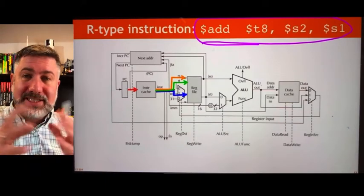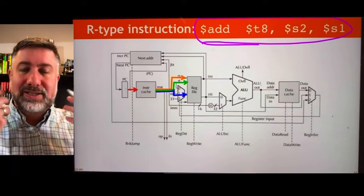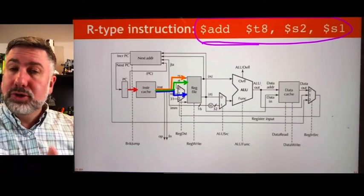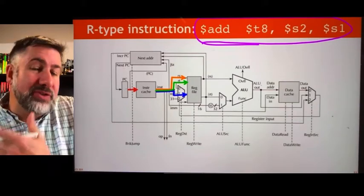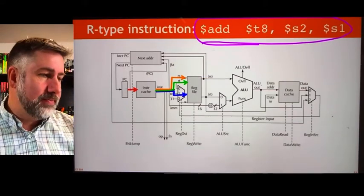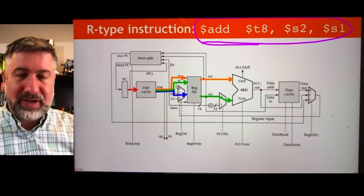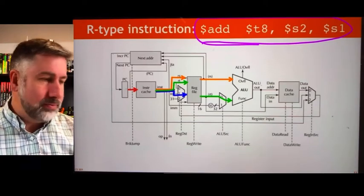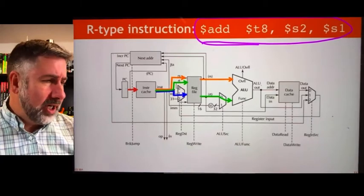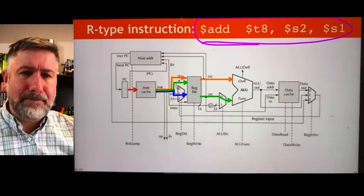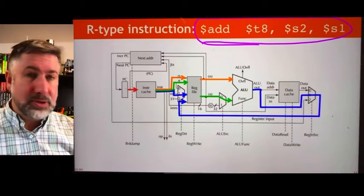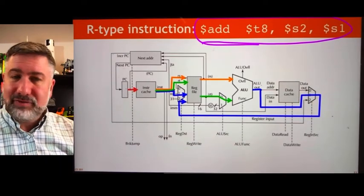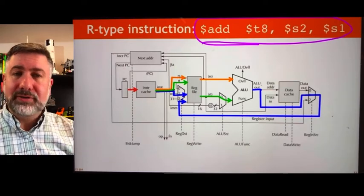Then it breaks it into pieces and puts those pieces as control information to the register file, telling it which two source registers to load and what eventual destination register to use. Then the register file looks up those values and presents the data—the contents of those registers—to the ALU. We've got multiplexers here that we're routing through. Then the ALU takes the result and, using routing information for this multiplexer, passes that information back into the register file to store it in t8. That's the complete operation of that instruction.